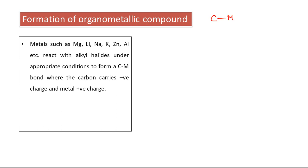The fourth method is formation of organometallic compounds. Organometallic compounds contain a C-M (carbon-metal) bond. Metal is more electropositive, so the electron cloud is closer to carbon. Considering polarity, there is partial charge separation, and if the bond is fully broken, carbon carries negative charge and metal carries positive charge.